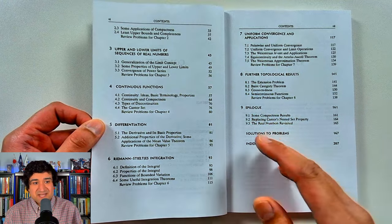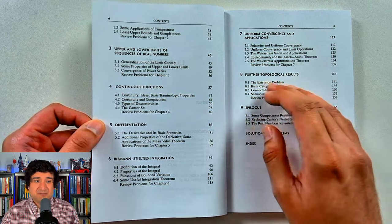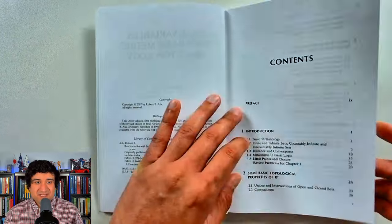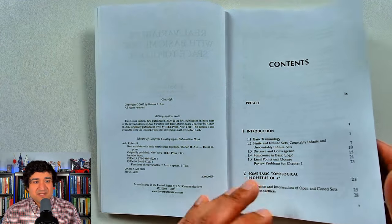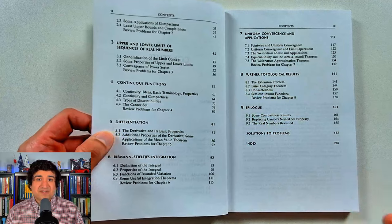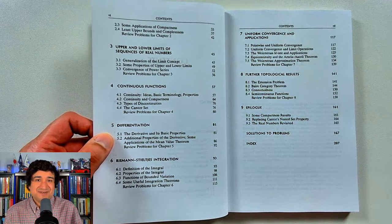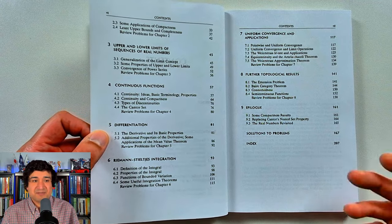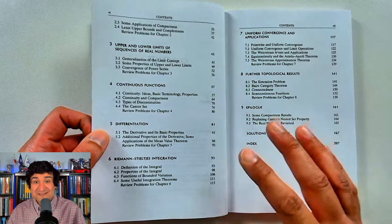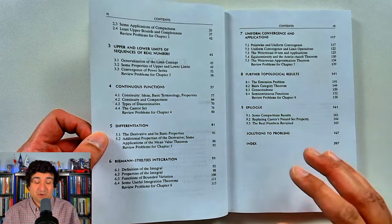So you can tell by the amount of emphasis placed here, we see further topological results there at the end. We got some basic topological properties of RP. A lot of this stuff in some books is pushed towards the end of chapters as an optional section. Not the case here. It's definitely part of the main text.